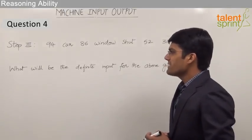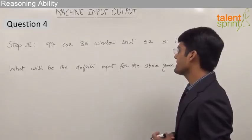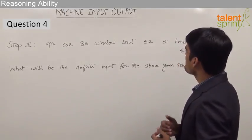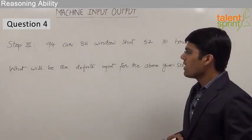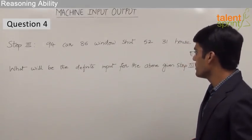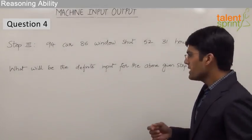In the given question, Step 3 is: 94 car 86 window shut 52 31 house. The question asks what will be the definite input for the above given Step 3. Let me draw your attention to...